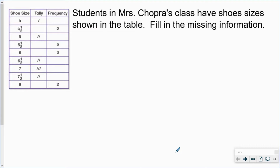Students in Mrs. Chopra's class have shoe sizes shown in the table. Fill in the missing information. We're going to fill in the gaps that appear in this table and then practice answering questions based on the information. One person has a shoe size four, so the frequency is one. Four and a half is missing two tally marks. Five students have a size five and a half shoe. Three students wear a size six.